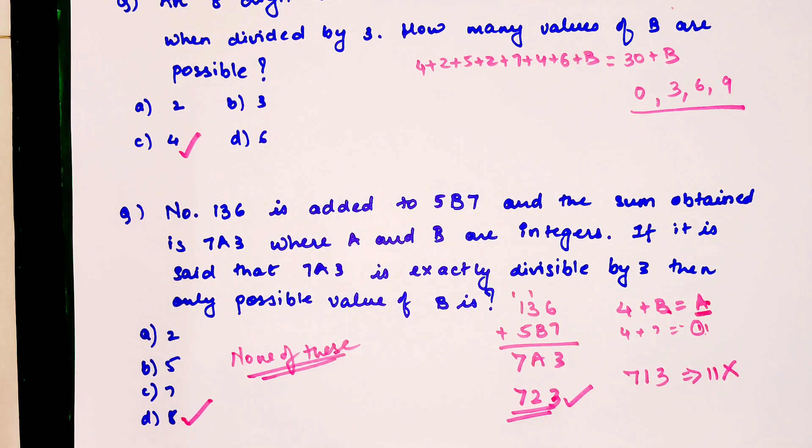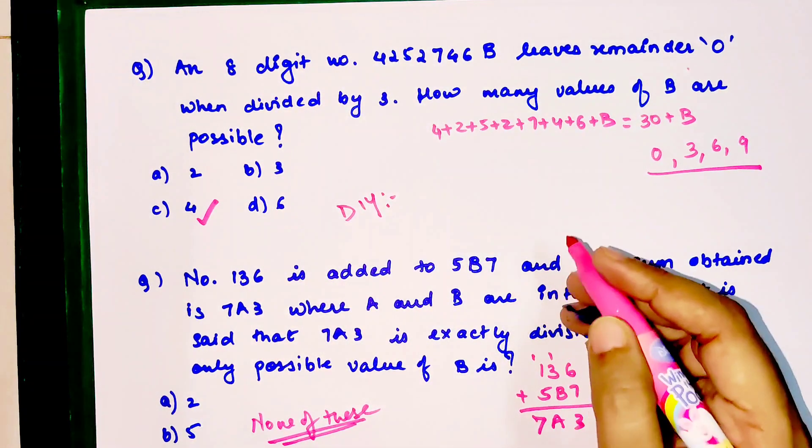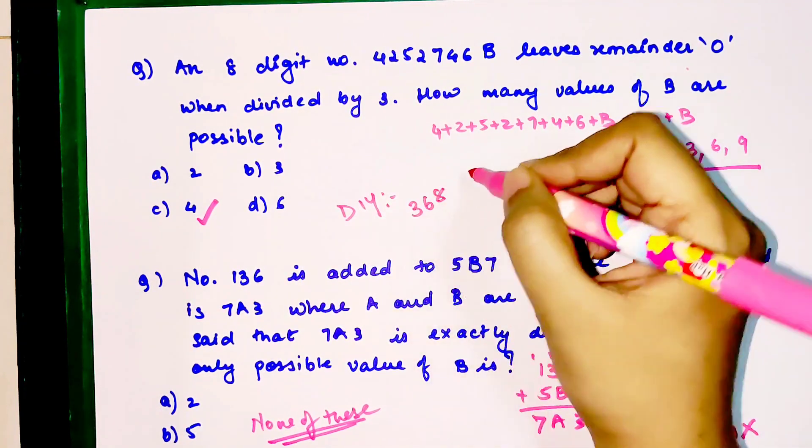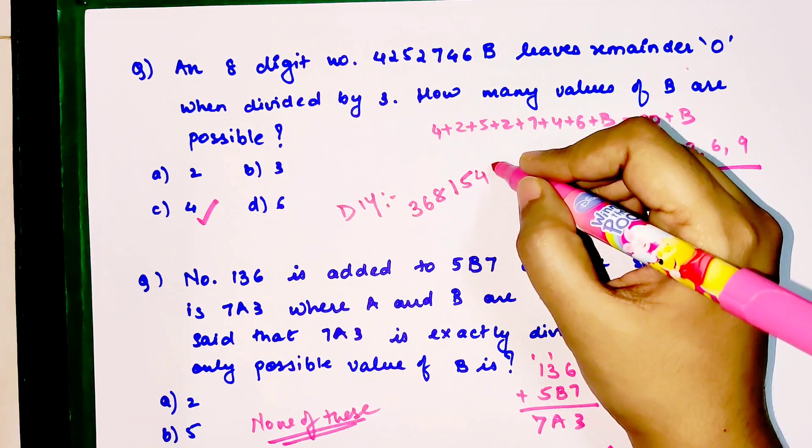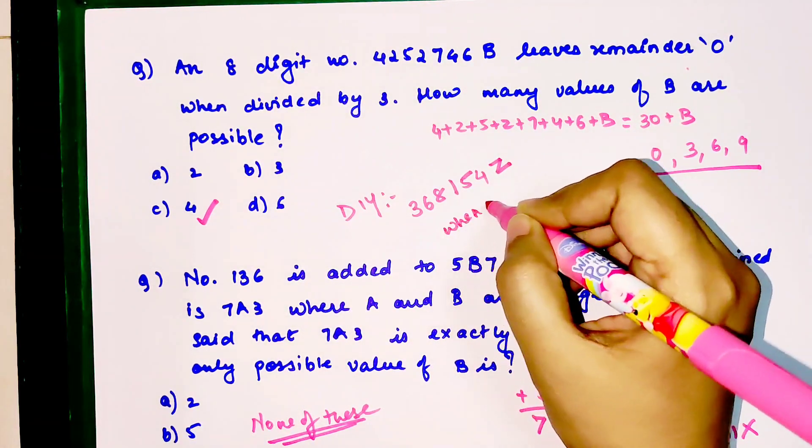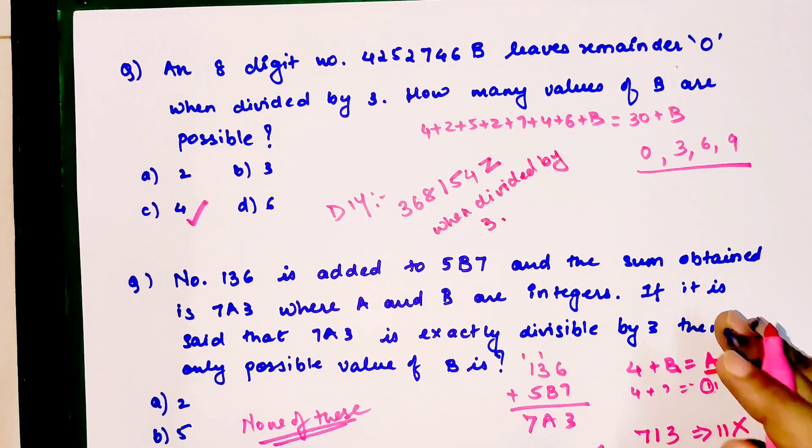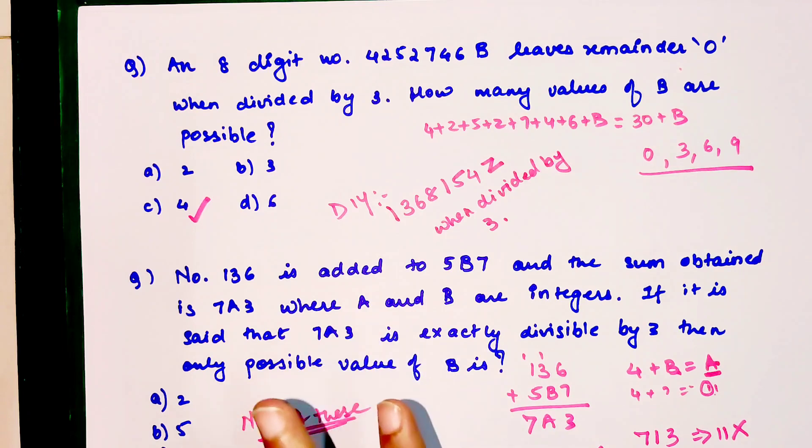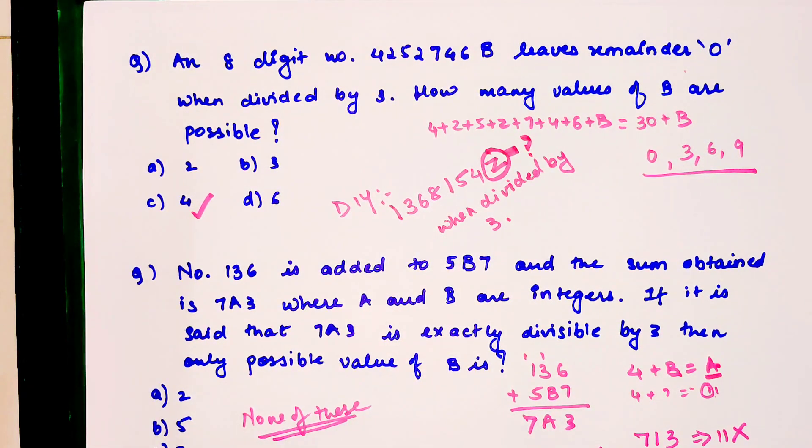Now time for your DIY. I'm going to give you a number which is 3681541Z, and this leaves the remainder 0 when divided by 3. Let me know how many possible values you can find for Z in the comment section. That's it for now, I will see you in the next video.